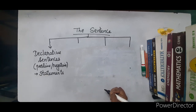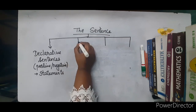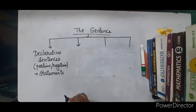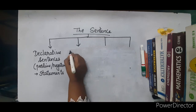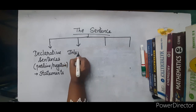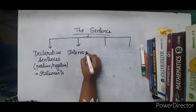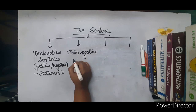The second type of sentence we are going to learn is interrogative. It is interrogative sentences. So the second type of sentence is interrogative sentences.